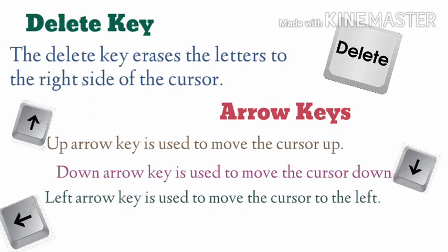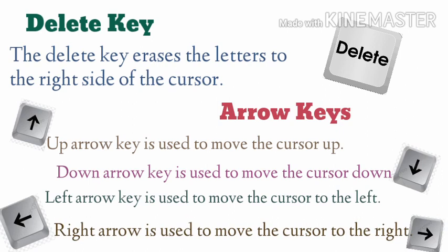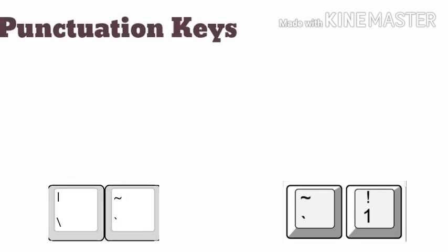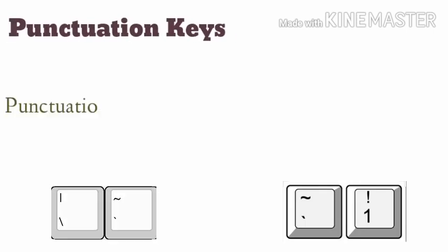The left arrow key moves the cursor to the left-hand side, and the right arrow key is used to move the cursor to the right. With the help of these four types of arrow keys, you can move your cursor in all four directions.